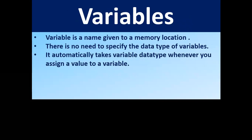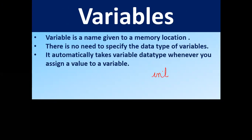A variable is a name given to a memory location, and there is no need to specify the data type. If you have knowledge of other languages like C++, whenever you declare a variable you have to specify its data type — for example, 'int' followed by the variable name. But in Python there is no need to specify the data type; it automatically determines the type whenever you assign a value to a variable.